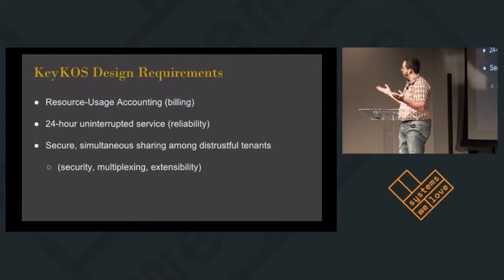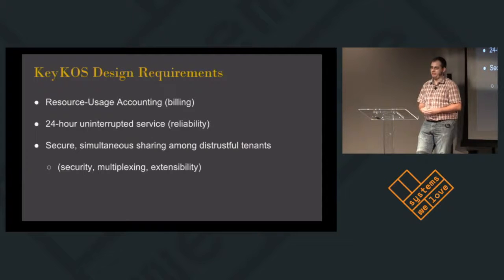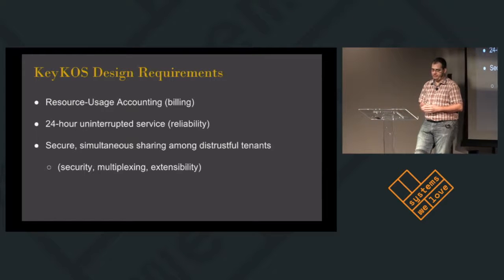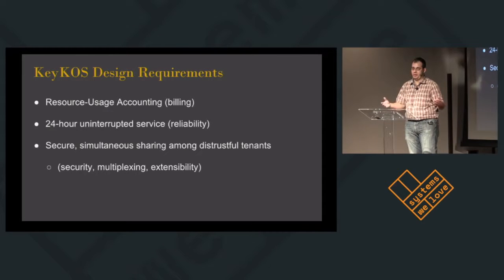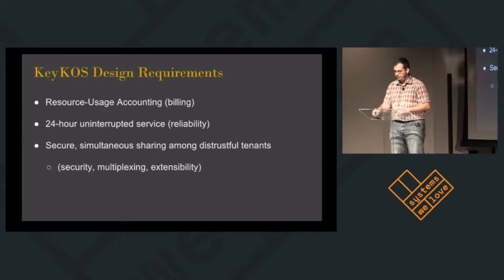They wanted uninterruptible service because now you are giving people a service, not selling them hardware. Their reliability requirements tend to go up. They were very focused on the idea of adversarial users — you needed to secure resources so other users weren't able to access them. You needed to multiplex everything because nobody's going to have direct access; it has to be shared among all the tenants. And it needs to be extensible, which primarily came out in terms of implementing all of these different operating systems interfaces.